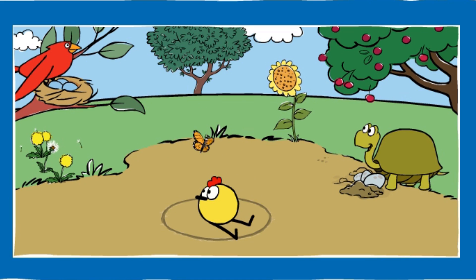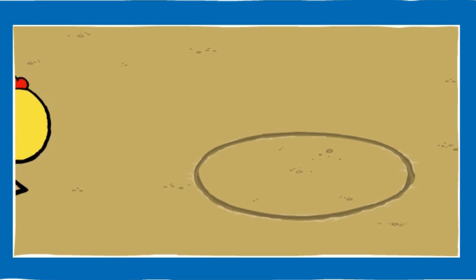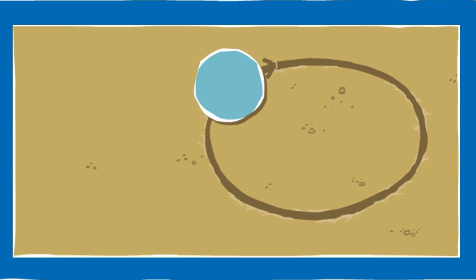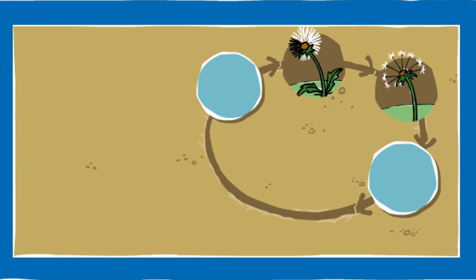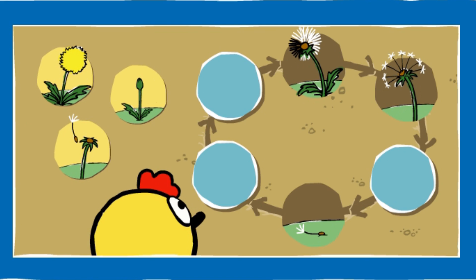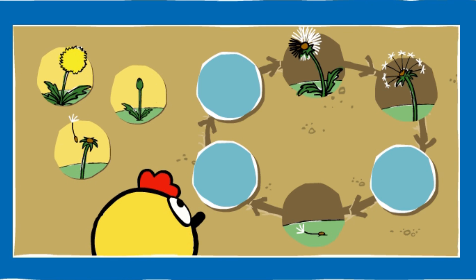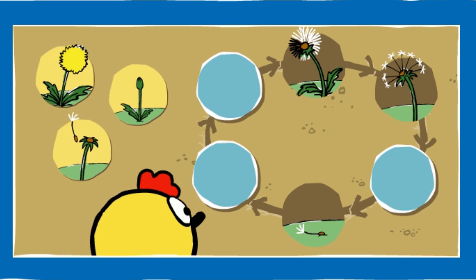Dandelion! How about dandelions? What happens when they grow from a seed? Help Peep put things in the right order. Drag the pictures onto the spots in the circle where you think they go. Think about what happens first and what happens next.